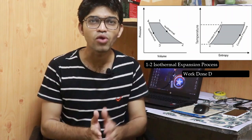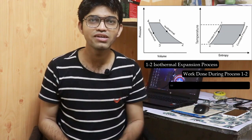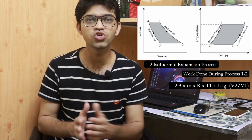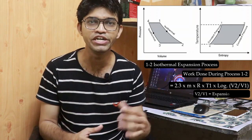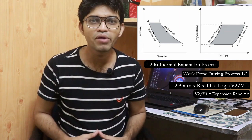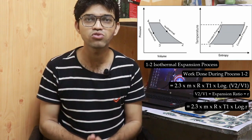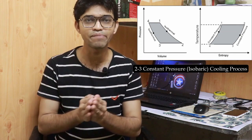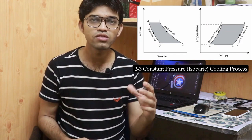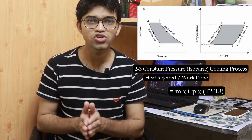For process 1 to 2, isothermal expansion, total work done is calculated using the same formula as in the Carnot and Stirling cycles: 2.3 × m × R × T1 × log(V2/V1), where V2/V1 is the expansion ratio r. So the formula becomes 2.3 × mRT1 × log(r). For process 2 to 3, constant pressure cooling, the heat rejected is m × Cp × (T2 − T3), where Cp is the specific heat at constant pressure.